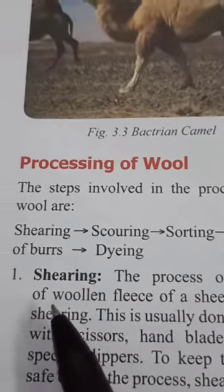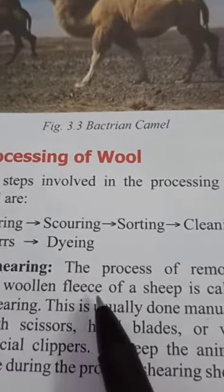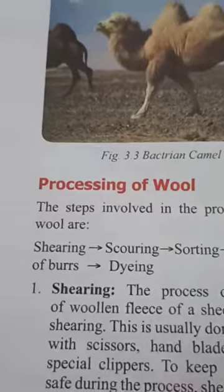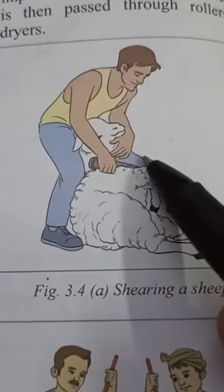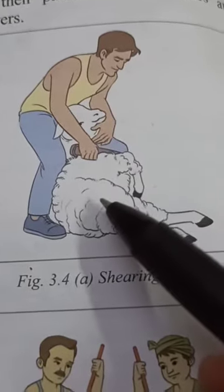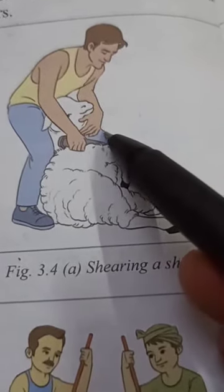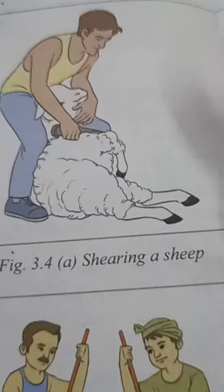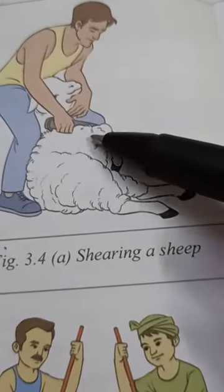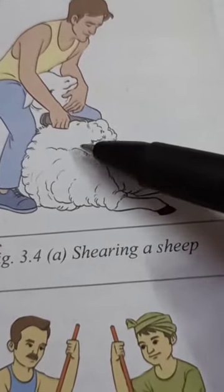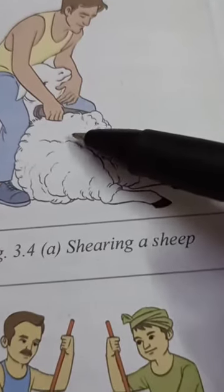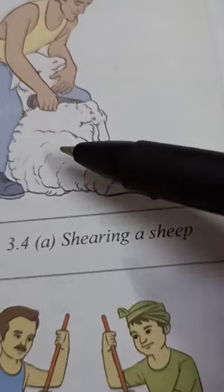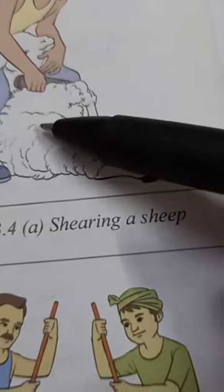The first step is shearing. The process of removal of the woolen fleece of a sheep is called shearing. You can see this person removing or shaving the fleece from the sheep. Fleece means the large amount of hair taken out from the animal's body with the help of shears — the tools used to shave off the hair of sheep.